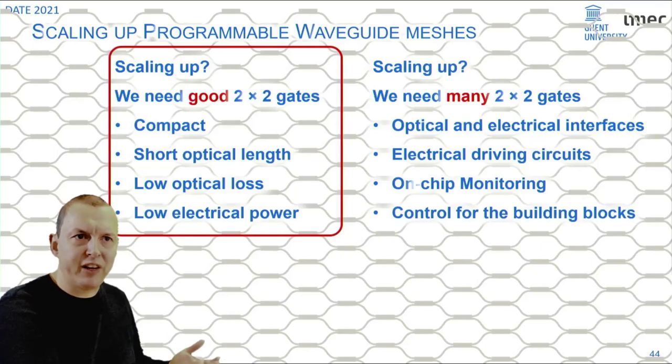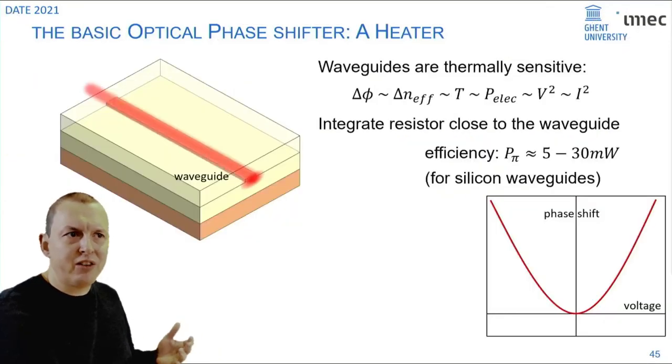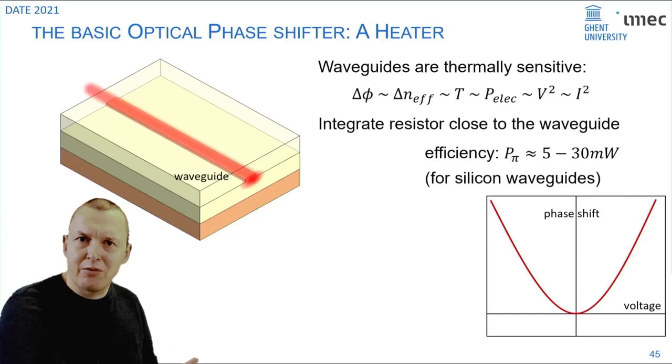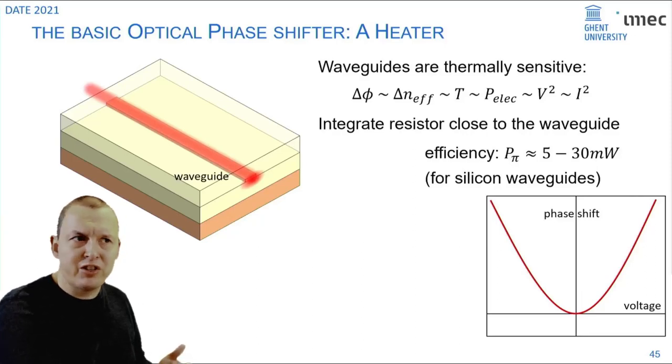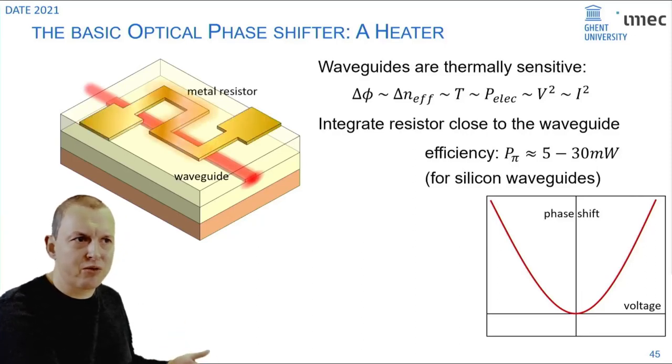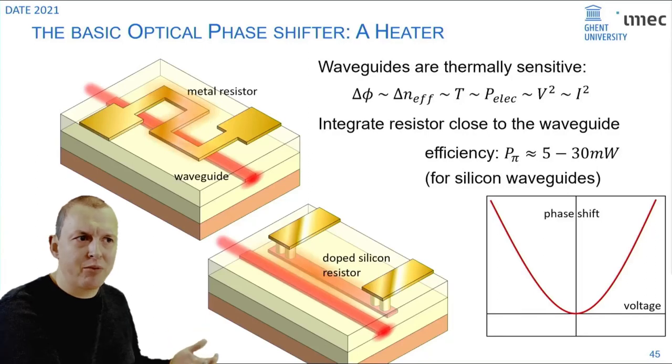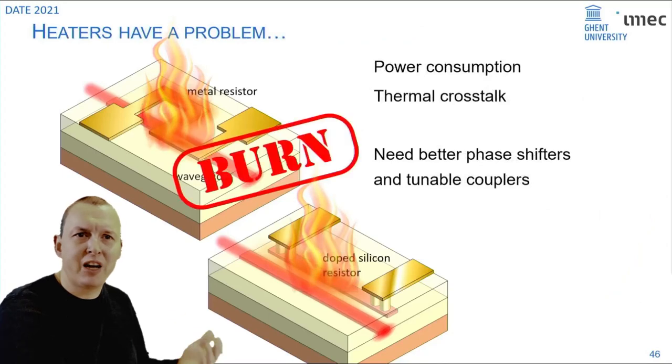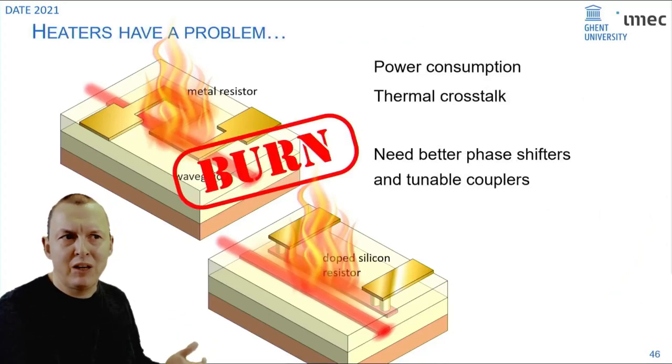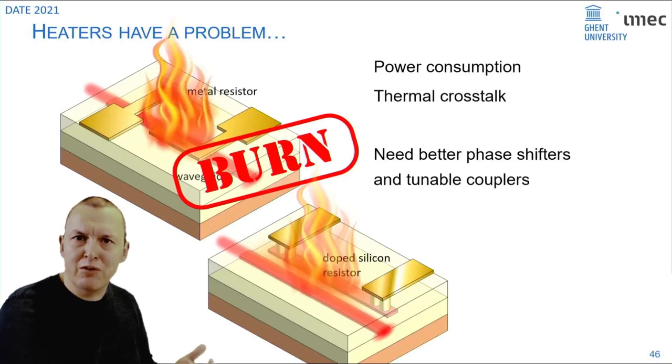How do you make these gates? The standard way to implement a phase shifter in many photonic technologies is just a heater. You put a resistor close to your waveguide and you heat up the waveguide which induces a phase shift. But if you scale this up to hundreds or thousands of heaters you will quickly run into a power consumption problem and also a control problem because of thermal crosstalk. So you need better phase shifters and better tunable couplers.